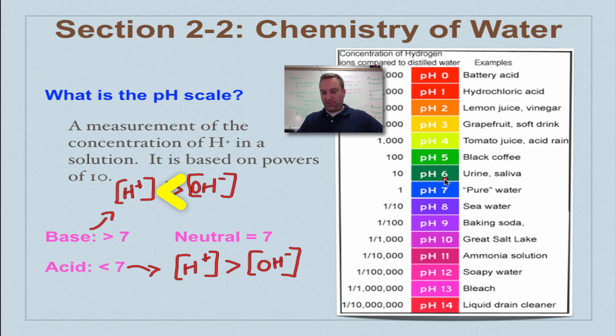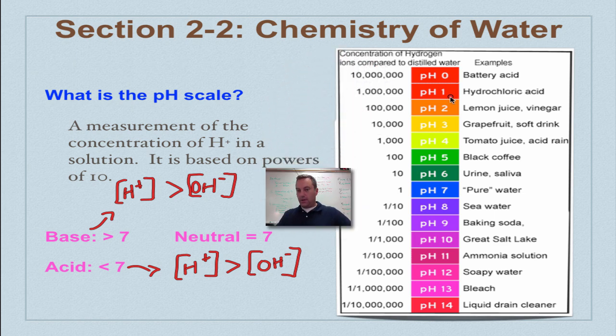Now, as you move farther and farther away from seven, you're going to get stronger. So battery acid has a pH of zero, hydrochloric acid, which is stomach acid, is a pH of one. Now, the farther you get away from seven, the stronger you're going to be. Remember this powers of 10, that means something. So let's look at urine, which has a pH of six, slightly acidic.